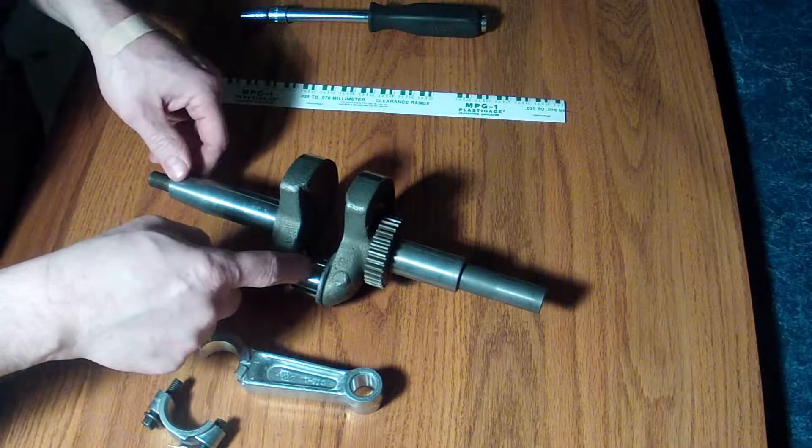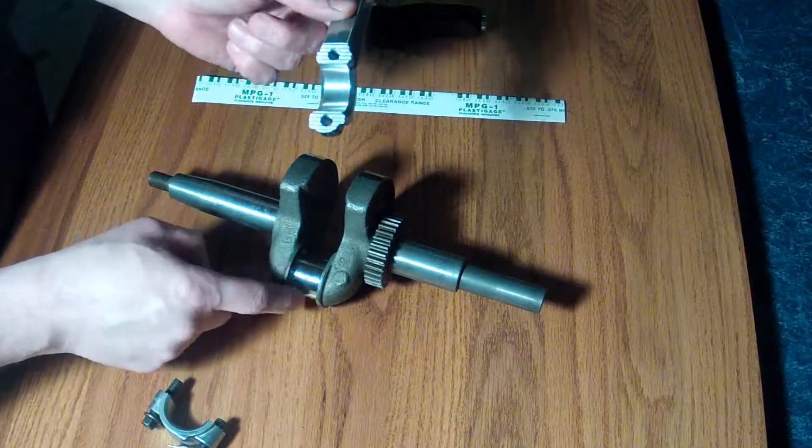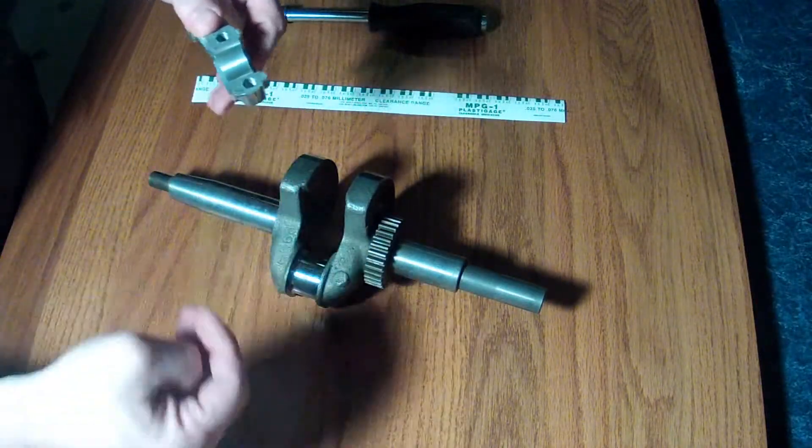is to figure out what the clearance is between the inside of the connecting rod here and the crank journal. There has to be enough clearance there for oil to be able to get in there and